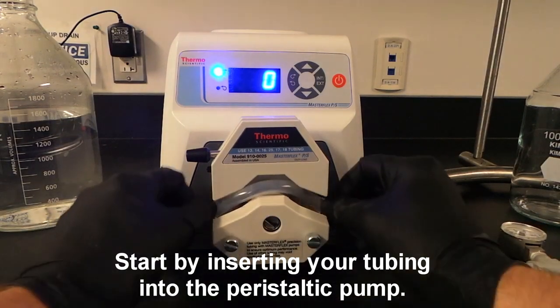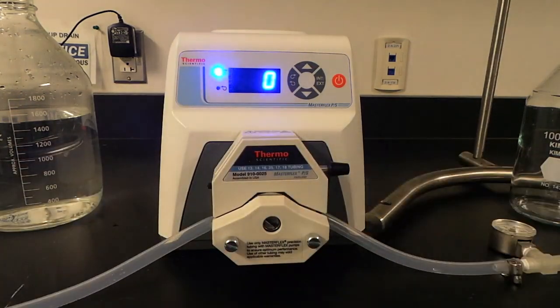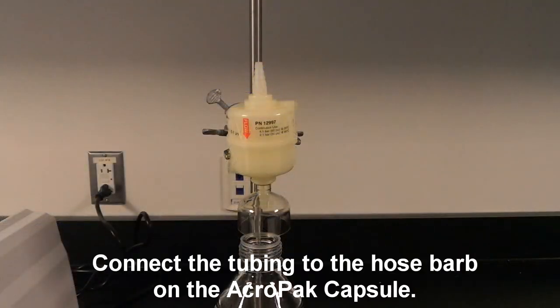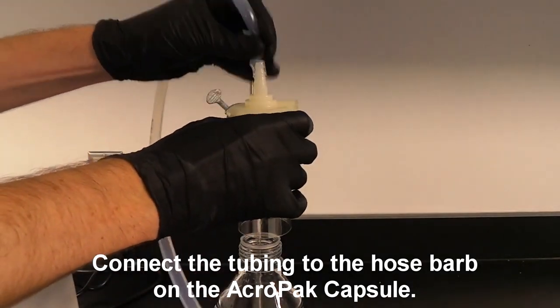Start by inserting your tubing into the peristaltic pump. Then, connect the tubing to the hose barb on the Acropac capsule.